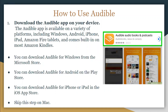You can download Audible for Windows from the Microsoft Store. If you're using an Android device, you can download Audible on the Play Store. If you're using an iPhone or iPad, you can download it on the App Store. You can skip this step if you're using Mac.